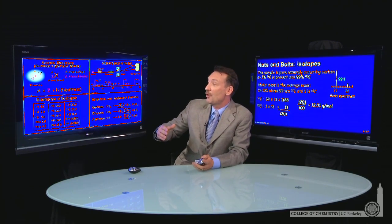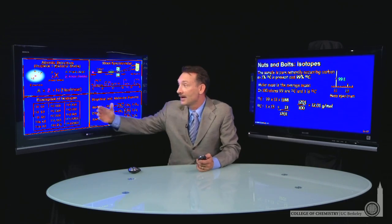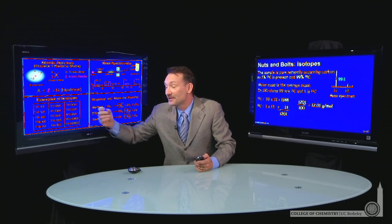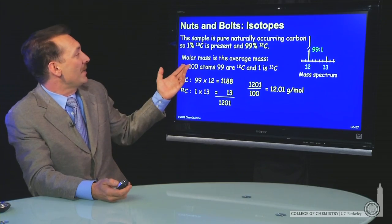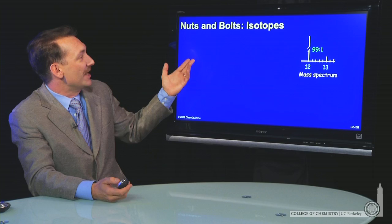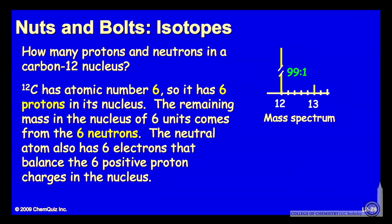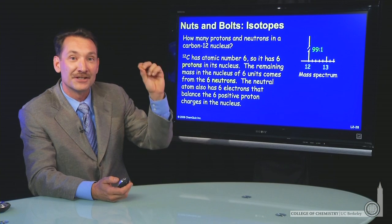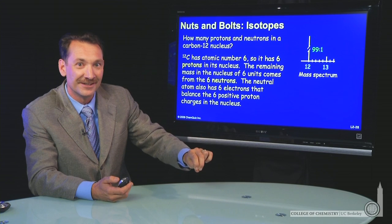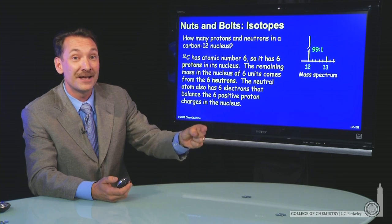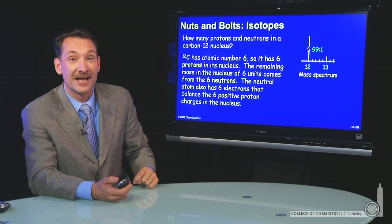That is the grams per mole we get for carbon-12 and carbon-13 mixed together in their naturally occurring ratios. Now, how many protons and neutrons are in a carbon-12 nucleus? Carbon-12 has atomic number 6. Atomic number tells you the number of protons in the nucleus, and it determines the identity of the atom — if you know the number of protons, you know the identity of the element.